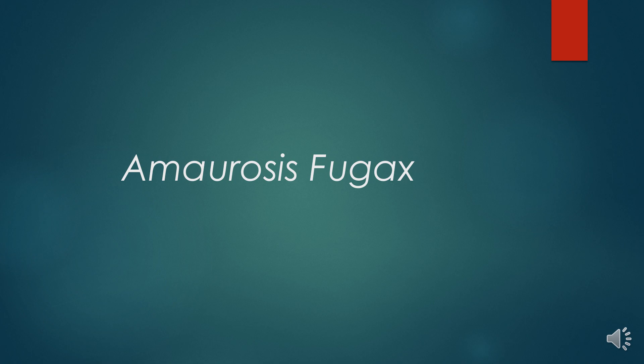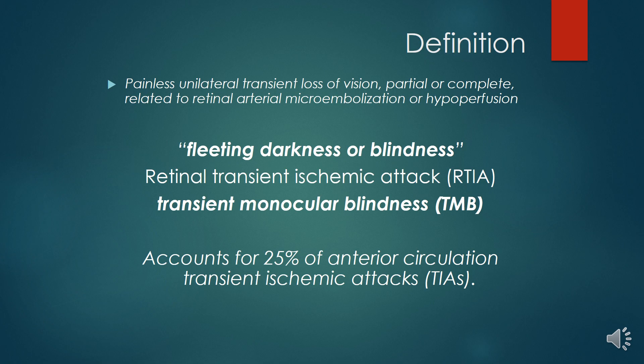Amaurosis fugax is a painless, unilateral, transient loss of vision — partial or complete — related to retinal arterial microembolization and hypoperfusion. Also described as fleeting darkness or blindness, it is also called retinal transient ischemic attack or transient monocular blindness. It accounts for 25% of anterior circulation transient ischemic attacks.